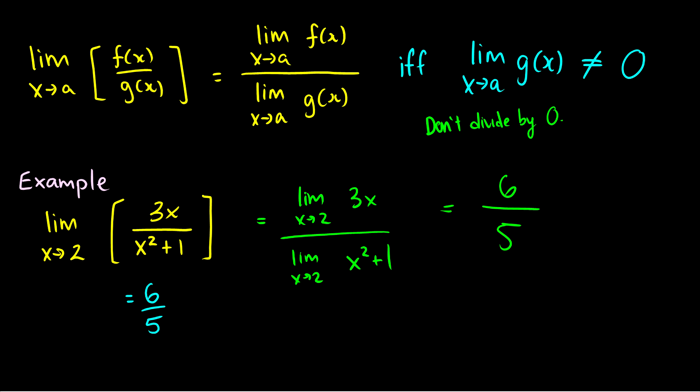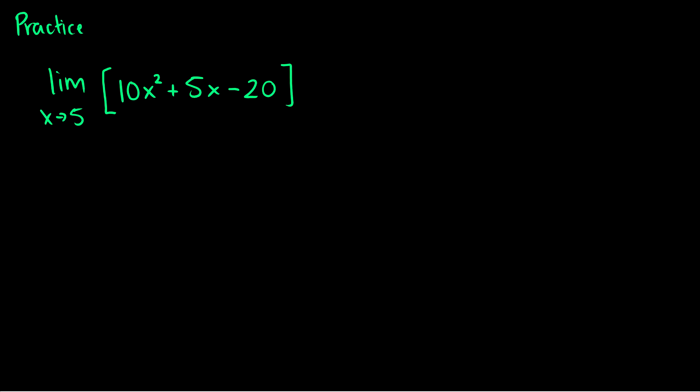These are really important rules you can use for computation questions and mechanical questions on your exams. Here's a practice question, and I'm going to apply all these laws individually just to see how they work. I can just plug five into these values, though we're going to get some big numbers. But let's show how we can use limit laws to simplify this a little bit. The first thing I can do is use the multiplication law and pull out a factor of five from everything. So the limit as x goes to five of ten x squared plus five x minus twenty becomes five times the limit as x goes to five of two x squared plus x minus four.